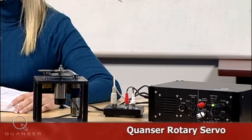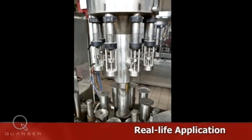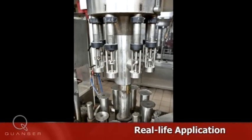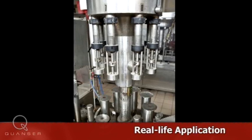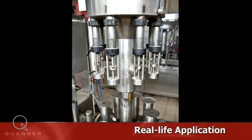Many engineering labs utilize this experiment to help students put control concepts into practice. The Rotary Servo experiment enables steady-state error analysis, which is critical when developing controllers for precision, such as bottle-labeling machines.